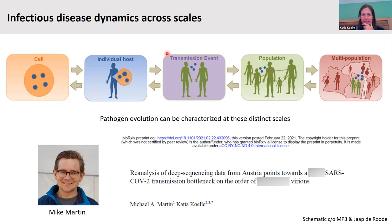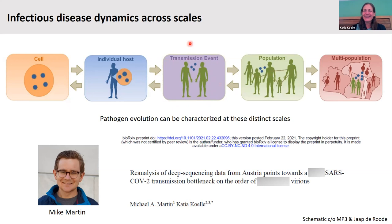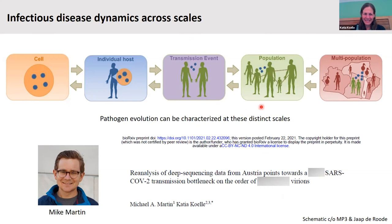What I'd like to talk about today is what we believe is happening at the single transmission event scale for SARS-CoV-2. This work is up on BioArchive — we never know whether to submit to BioArchive or MedArchive; someone got rejected from one and told to submit to the other, and it feels horrible to be rejected from a pre-print server. I've blocked out the conclusions so as not to give them away at this stage. All the work I'll talk about today is with a grad student in my group, Mike Martin, who's fantastic and really stepped up his research effort to take on a bunch of collaborative SARS-CoV-2 projects over the last year.